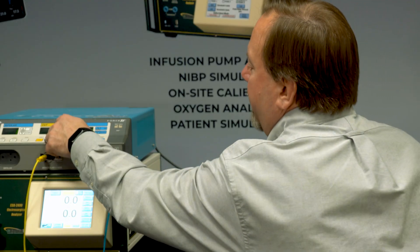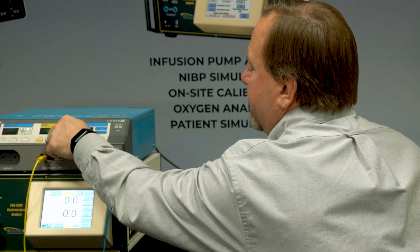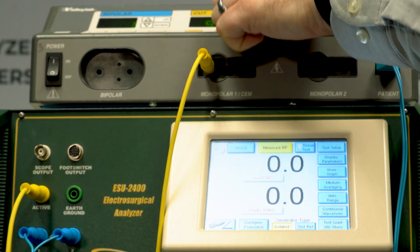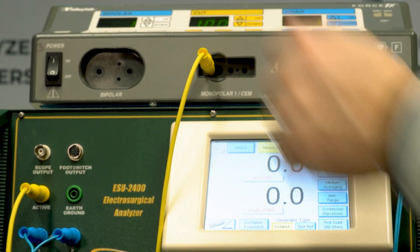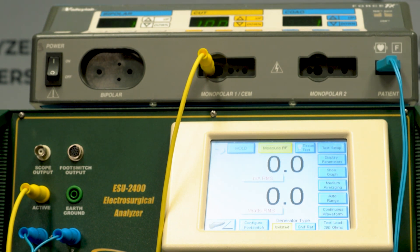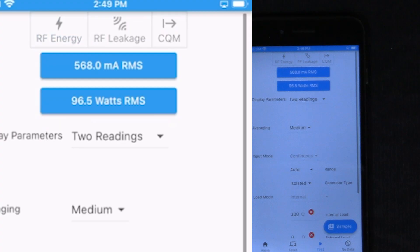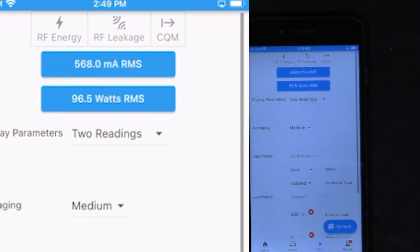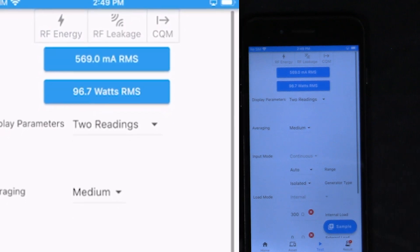We can go ahead and configure the generator for whatever power level we want to test. We can set that on the generator and then activate the output with the foot switch simulator. We'll see the readings on the ESU 2400 and these will also show on MyBC Mobile. I can press the sample button and it will record that reading for me.